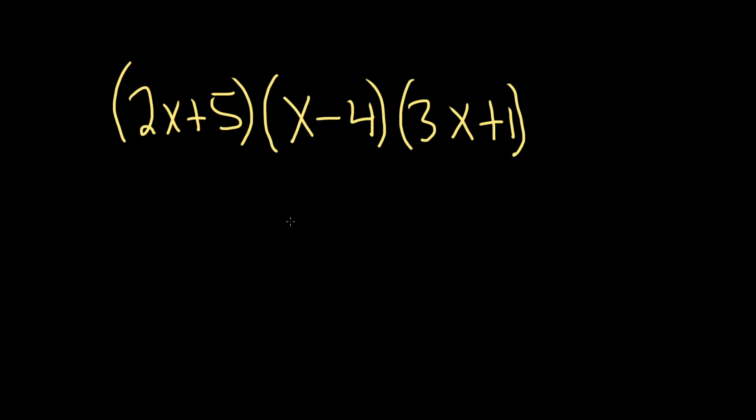In this problem, we have to multiply out this polynomial, so there's a couple of ways to do it. Let's start by multiplying out the first two. Let's just take these two and multiply them out. You could also multiply out the last two first if you like, but let's just work left to right.